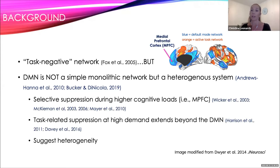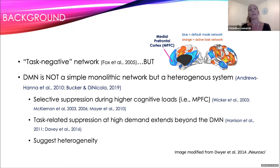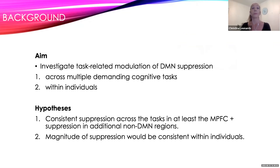A closer look at the literature shows evidence of selective suppression in the DMN in response to changing levels of cognitive demand. Most notably, the only DMN region to show consistent suppression across various tasks and cognitive loads is the medial prefrontal cortex. At higher levels of task demand, the suppression effect extends to regions beyond the default mode network, such as the insula. No studies have investigated the consistency of DMN suppression across multiple cognitive tasks in the same sample — and so that's what we did. We hypothesized we would observe consistent suppression across tasks in at least the medial prefrontal cortex, as well as suppression in additional non-DMN regions, and that the magnitude of suppression would be consistent within individuals.